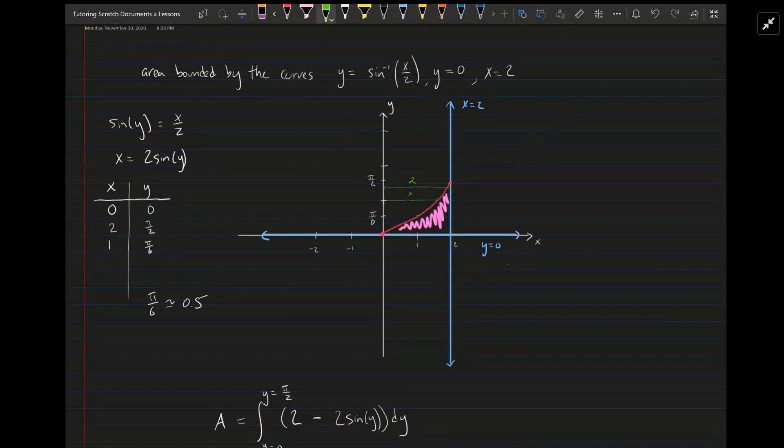So first I drew my axes, then I drew the easy lines, y equals 0, which is just the x-axis, as you can see down here, then x equals 2 right here. So those are two of the bounds, and then the hard one is y equals inverse sine of x over 2.